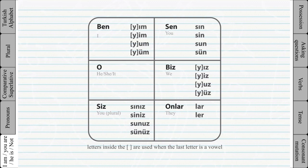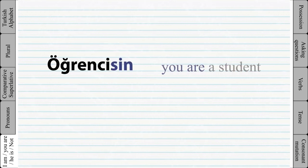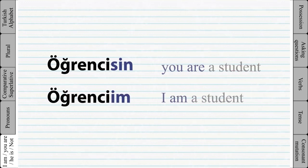Look at this table to see all the personal endings. The letter Y is used when the last letter of the word is a vowel and the personal suffix also starts with a vowel — Y works as a buffer between the two vowels. In Turkish, two vowels should not come after one another. For example, 'I am a student' — the last vowel of the word is I and the personal ending is also I, so the letter Y is used between the two vowels.